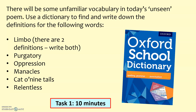Use a dictionary to find and write down the definitions for the following words. As I put in brackets there for limbo, there are a couple of definitions — I want you to write down both. The words are: purgatory, oppression, manacles — which doesn't actually come up directly in today's poem but will be useful in the next few weeks — cat-o'-nine-tails, and the word relentless. You need to pause this video now and take yourself 10 minutes writing down those words.